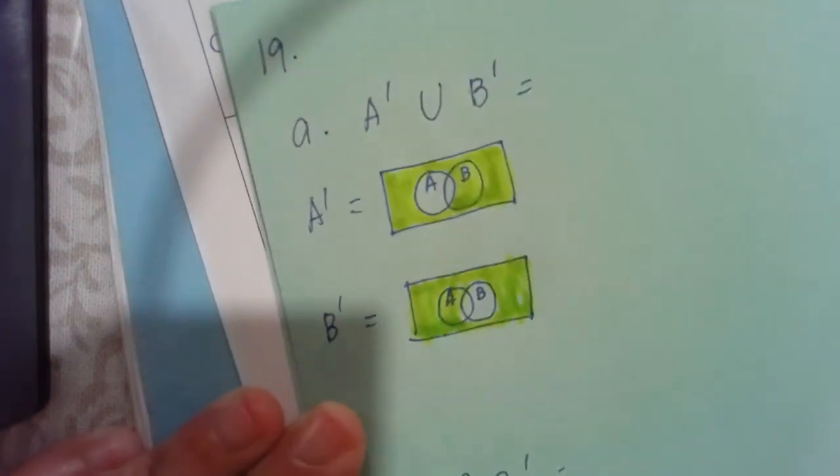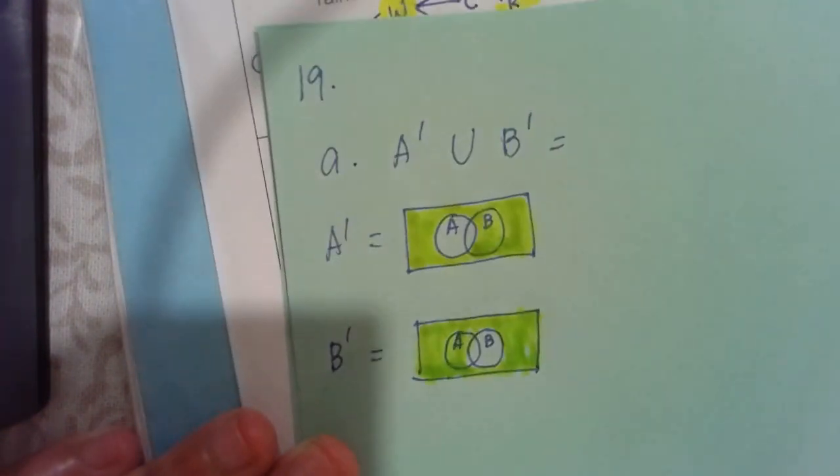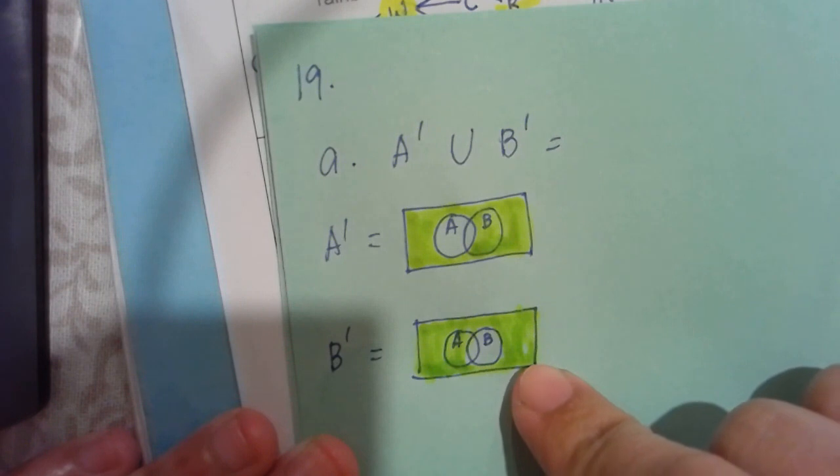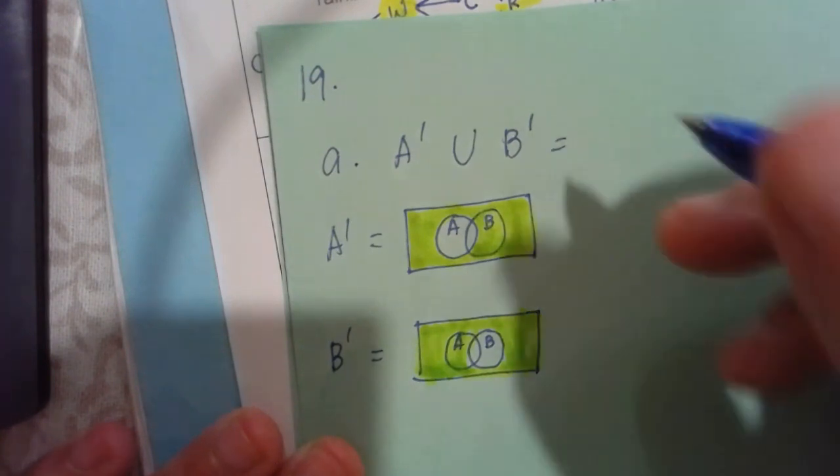There you go. Now B prime, meaning at this moment we are not shading the set of B or shading everything except B. Union means to combine. So if we're going to combine these two, which are the part where we need to shade and doesn't need to be shaded.